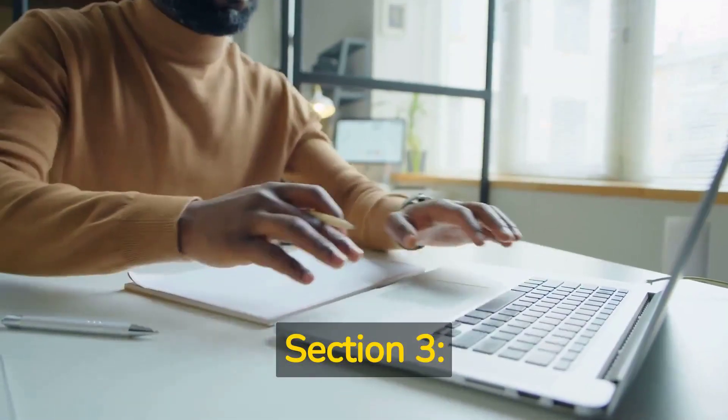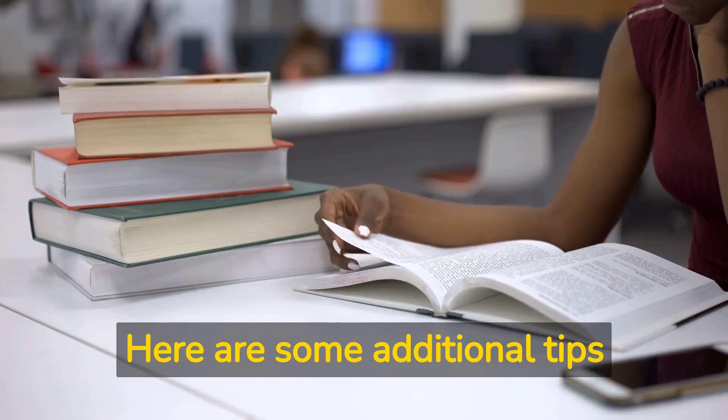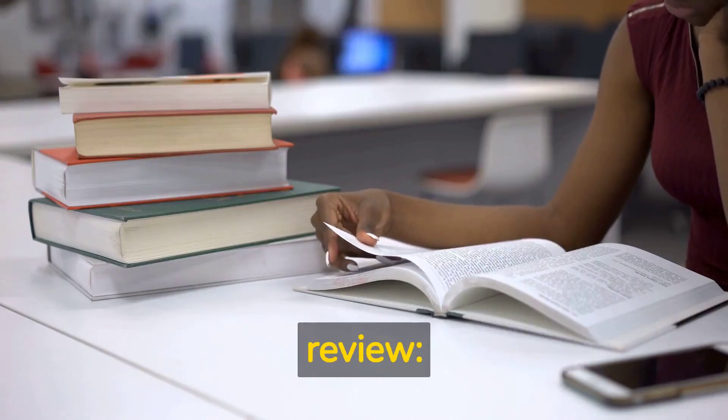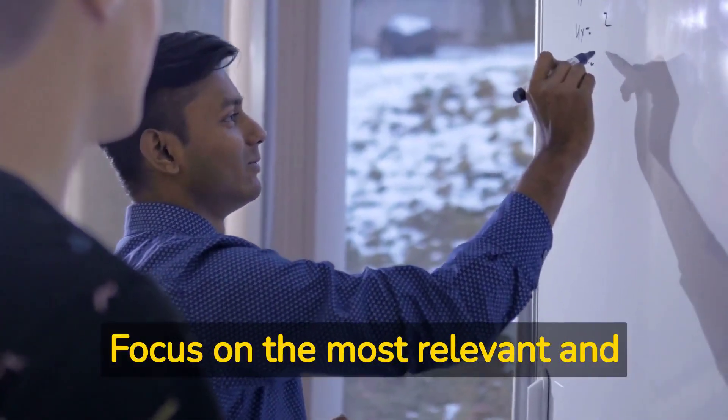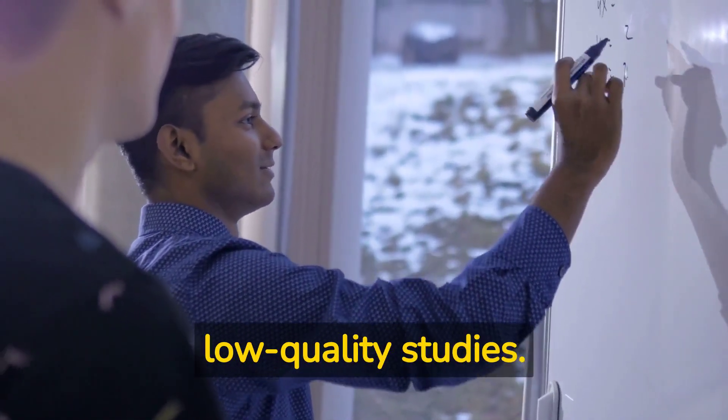Section 3: Tips for writing a strong literature review. Here are some additional tips for writing a strong literature review. Be selective, focus on the most relevant and high-quality literature, and avoid including irrelevant or low-quality studies.